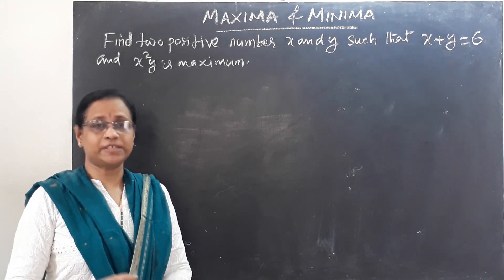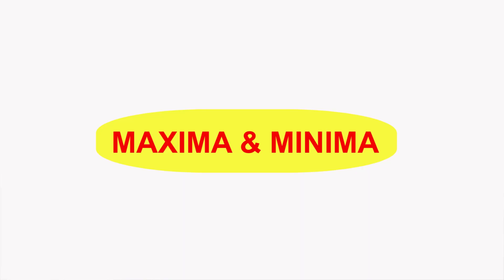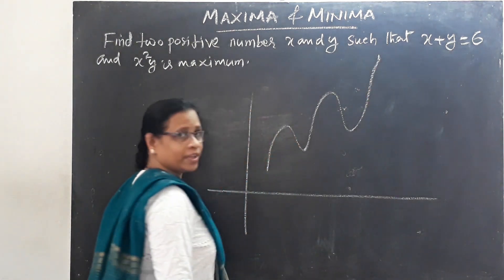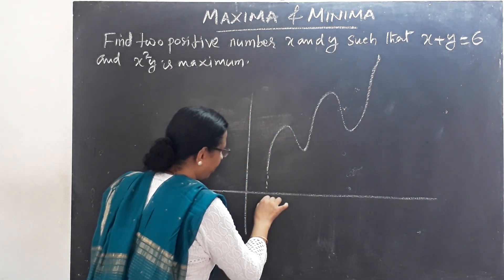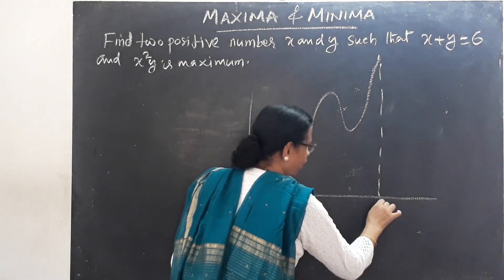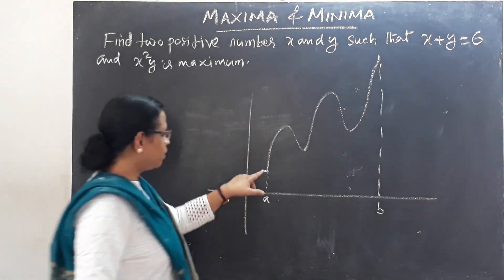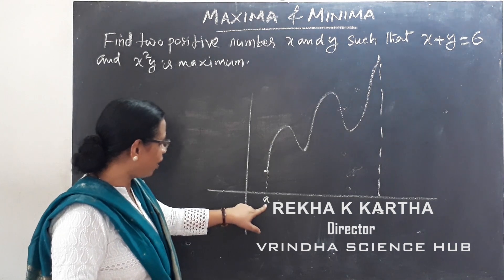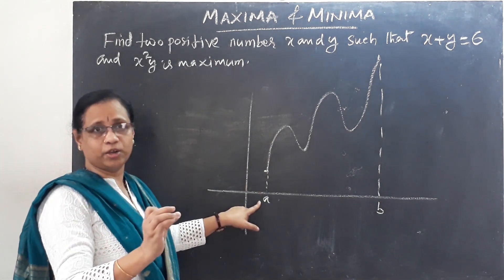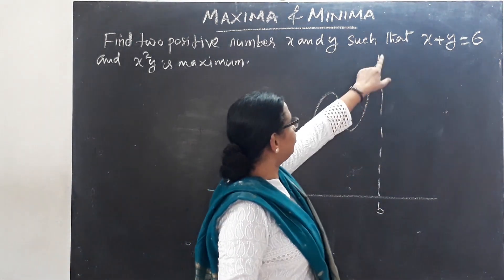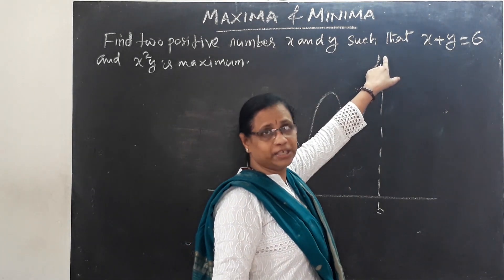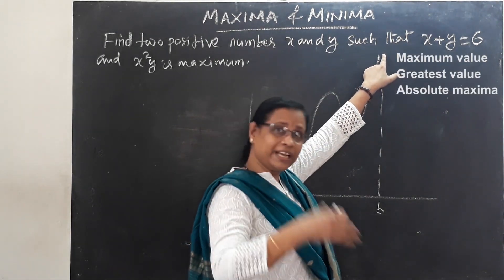The last topic of Applications of Derivatives is Maximum and Minimum. We have a curve with points A and B. One point is the minimum and we have a maximum value — this is the greatest value.